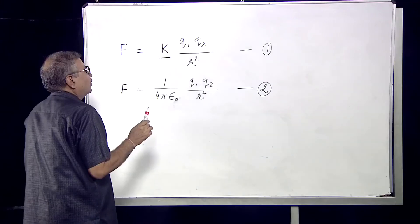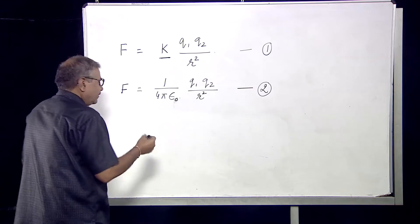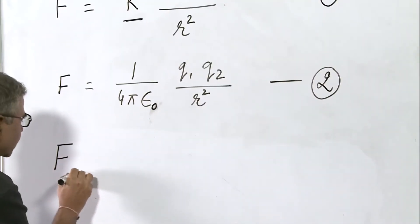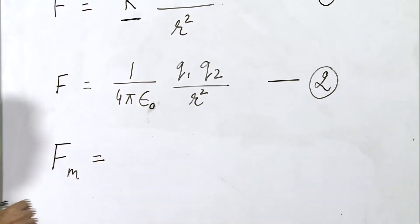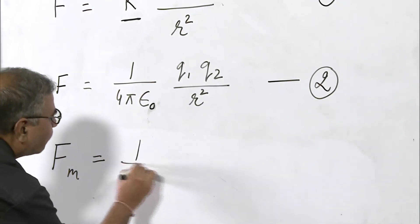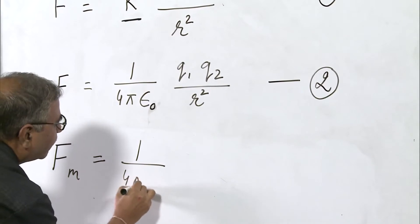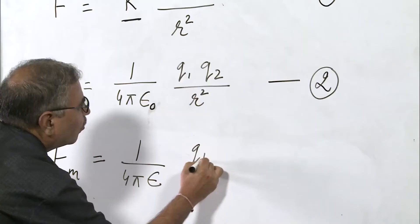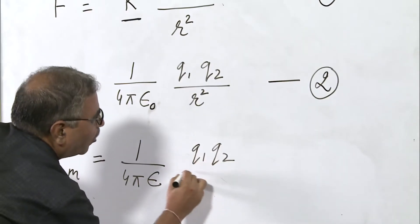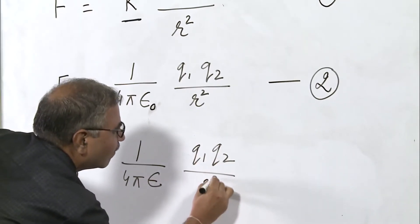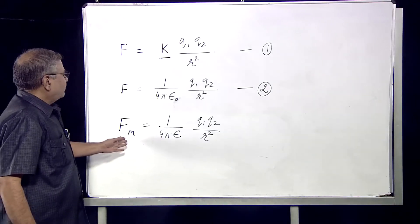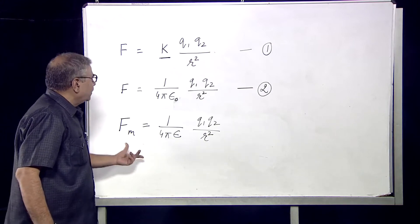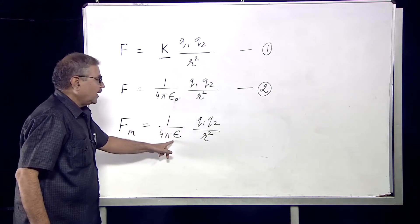If these two charges q1 and q2 are kept in a medium, then the force between these two charges can be written as F_medium is equal to 1 upon 4·π·ε · q1·q2 upon r square. When we write the force between these two charges in a medium, ε₀ is replaced by ε.